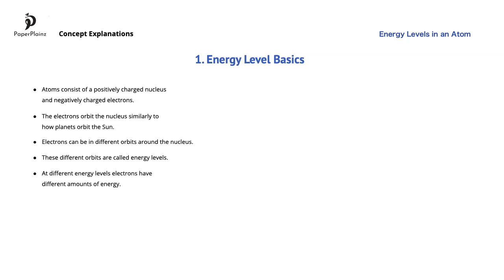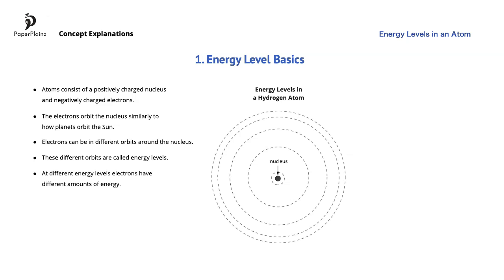The simplest atom is the hydrogen atom. It is made up of a proton and an electron. Let's examine the energy levels in a hydrogen atom. One way to picture the energy levels or orbits is like this: the nucleus is represented by the black dot, and the five dashed circles represent the five energy levels or orbits in the hydrogen atom. These energy levels are simply named as first, second, third, fourth, and fifth energy levels.